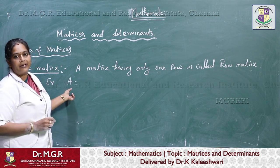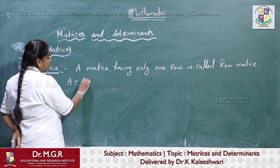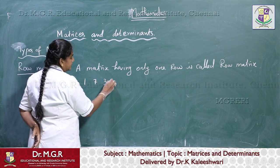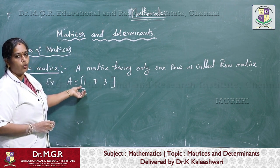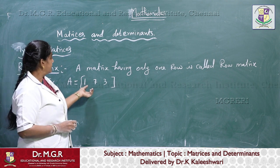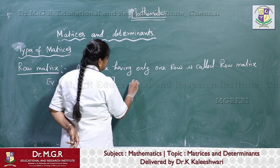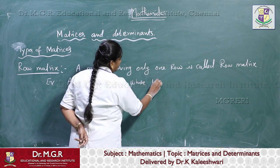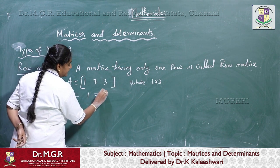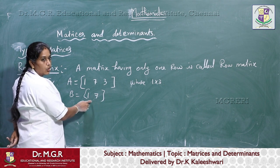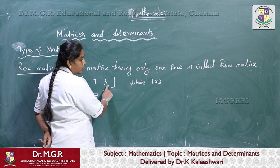matrices are generally denoted by the capital letters A, B, C. For example, A equal to [1, 7, 3]. This matrix has only one row, so we can call it a row matrix, whose order is 1 by 3.